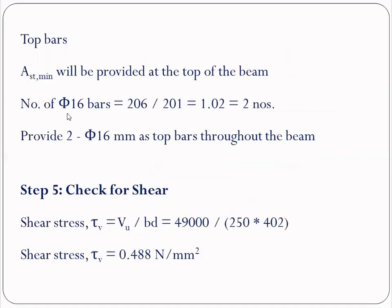Top bars: minimum two bars must be provided at the top. AST minimum = 206 mm². Assuming 16mm bars at top, number required = 206/201 = 1.02, but providing minimum 2 bars. Provide 2 #16mm bars at top throughout the beam.